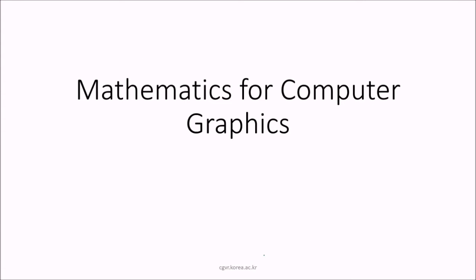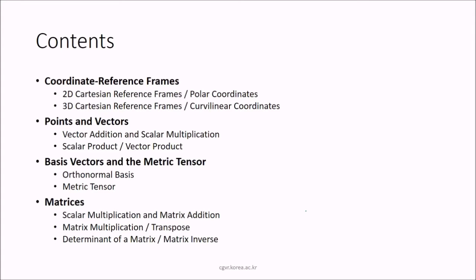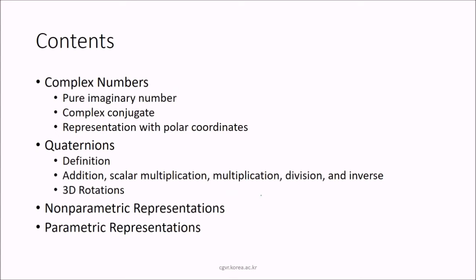Let us see the mathematics of computer graphics — computer graphics means mathematics only. We will be seeing the coordinate reference frames, points and vectors, basis vectors and the metric tensor, matrices, various operations on matrices and complex numbers, and quaternions with non-parametric representations and parametric representations.